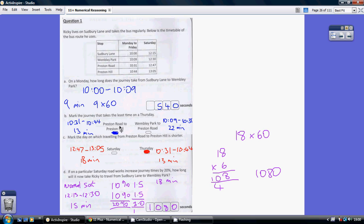Preston Road to Preston Hill, 10.31 to 10.44. That's 13 minutes. Wembley Park to Preston Road, 10.09 to 10.31. That's 22 minutes. So, the least amount of time is this one taking 13. So, we mark this one, Preston Road to Preston Hill.